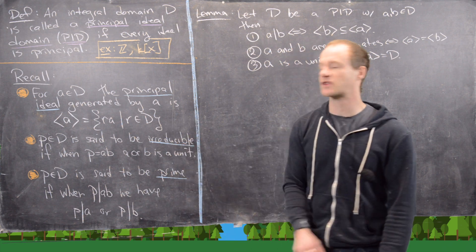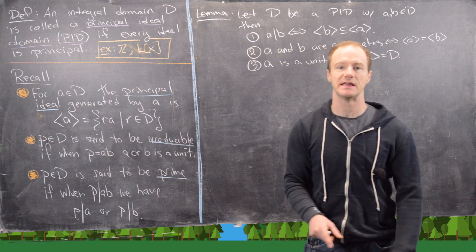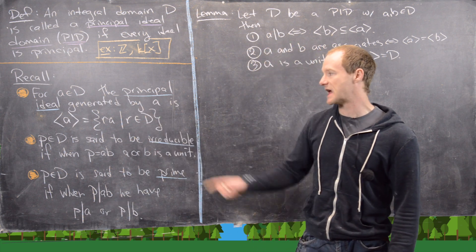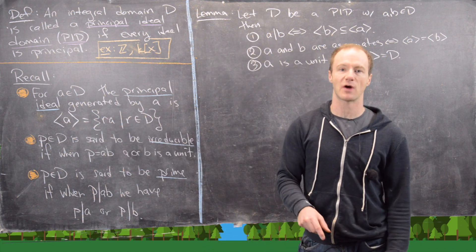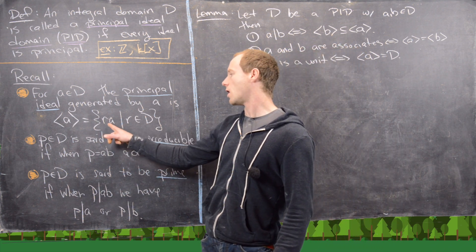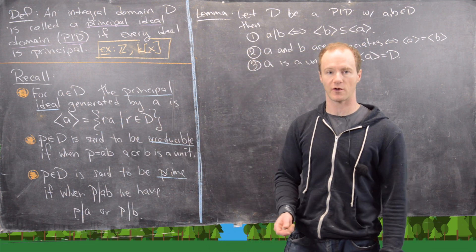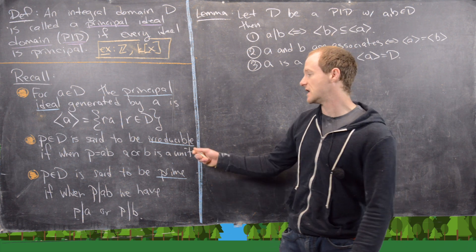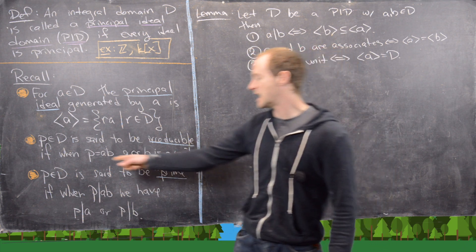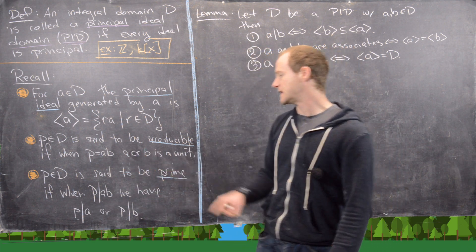Let's recall three following notions. For an element a in D — and really this can be in any commutative ring with one — the principal ideal generated by a is written ⟨a⟩, or sometimes (a), and that equals all multiples of a as r runs through the whole ring. Next, an element P in D is irreducible if when we factor P into A times B, then A or B is a unit.